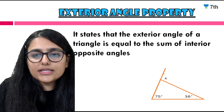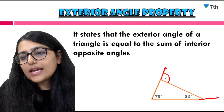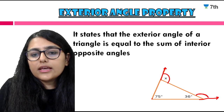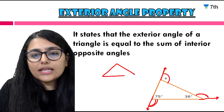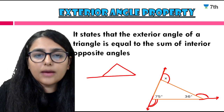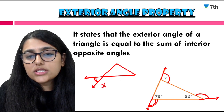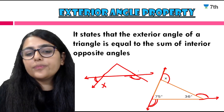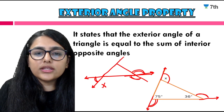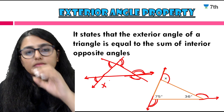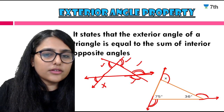An exterior angle is formed when one side of the triangle is extended. For example, if we extend side AB, the angle formed outside is the exterior angle. Be careful: only one side should be extended to form the exterior angle — extending two sides does not give an exterior angle. The two angles formed by extending in opposite directions will be equal because they are vertically opposite angles. So the exterior angle x equals the sum of the two interior opposite angles.